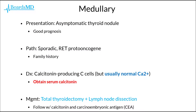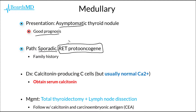Next, we have medullary carcinoma of the thyroid, which classically will present as an asymptomatic thyroid nodule. This also tends to have a good prognosis. The pathophysiology of medullary carcinoma of the thyroid can be sporadic in nature; however, this is related to the RET proto-oncogene, which is ultimately what gives rise to the multiple endocrine neoplasia, or MEN syndromes. Therefore, in patients with suspected medullary carcinoma of the thyroid, the family history is going to be essential, as we may see evidence of one of these MEN syndromes.